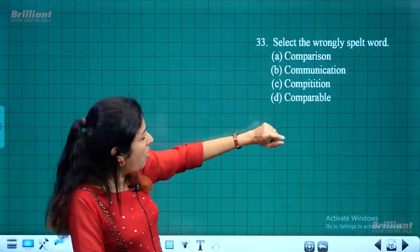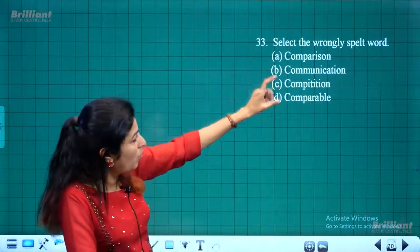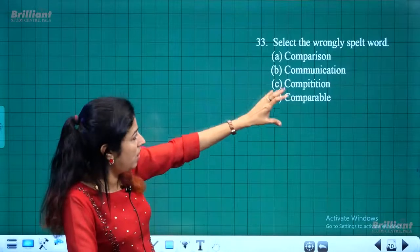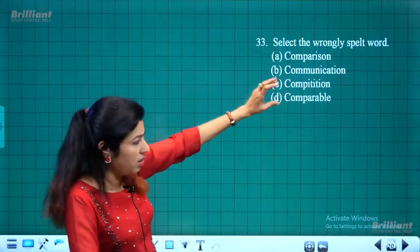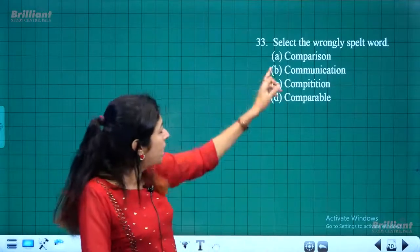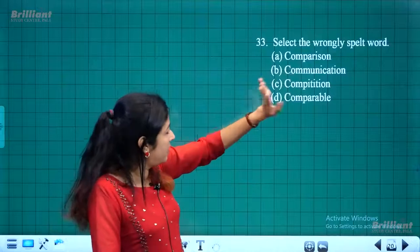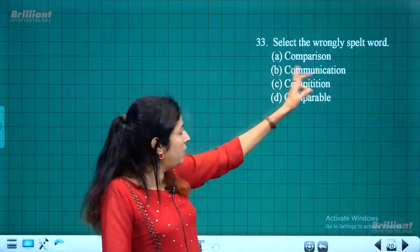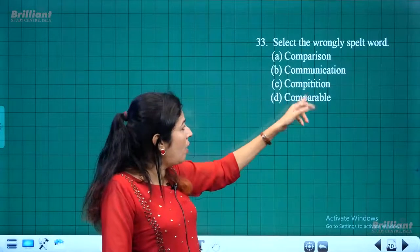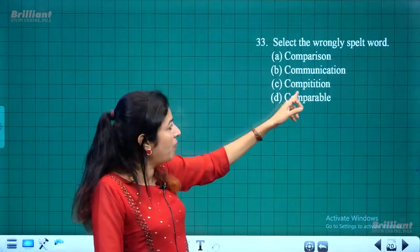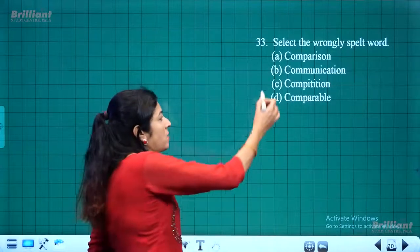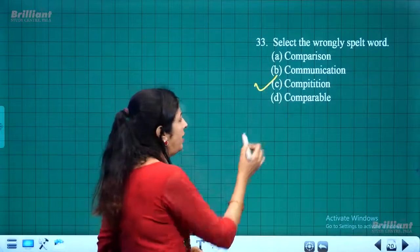Select the wrongly spelled word: 'Comparison' — correct; 'communication' — correct; 'competition' — this is wrong. The correct spelling is 'competition' with 'e' replacing the incorrect 'p.'